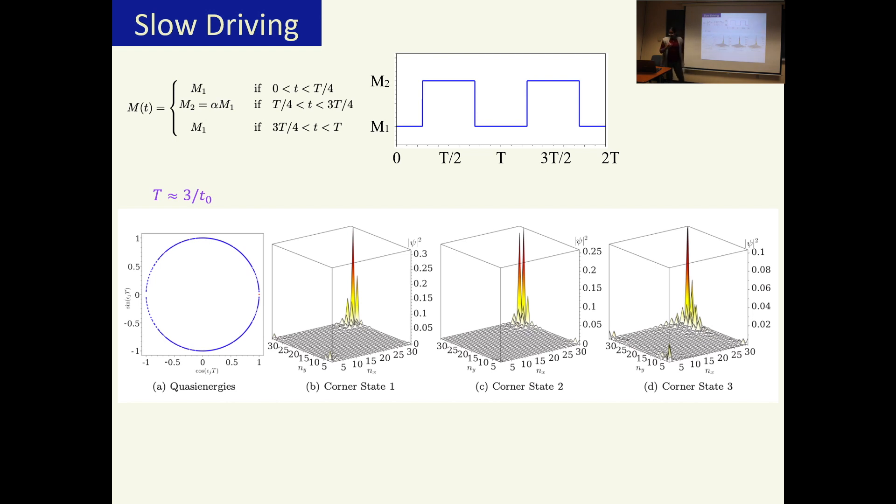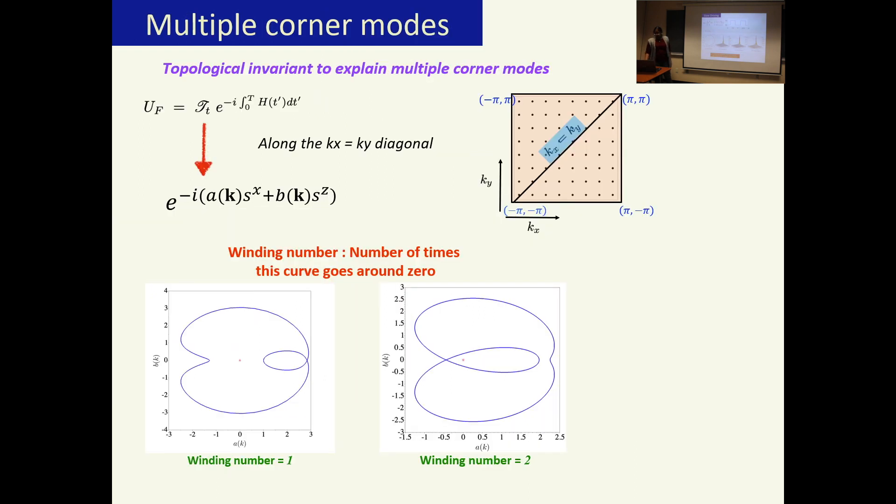Now what we do is we reduce the frequency of the drive, so we make the drive slower, and something very interesting happens: we see multiple corner modes. However, we saw that the mirror winding number can be calculated only modulo 2, so it can be either 0 or 1. So why is it not correctly counting the corner modes? Is there an invariant that can capture the existence of these multiple corner modes? So in addition to predicting whether or not there is going to be a zero dimensional mode, can there be a topological invariant that can capture these modes? And the answer is yes.